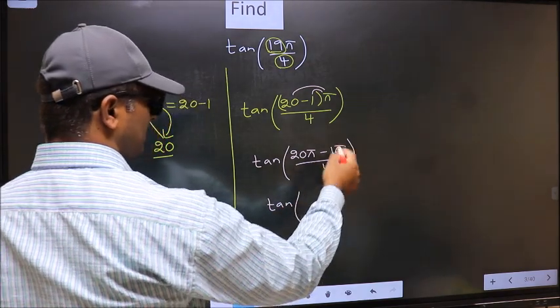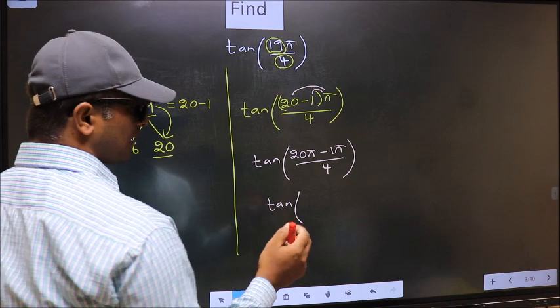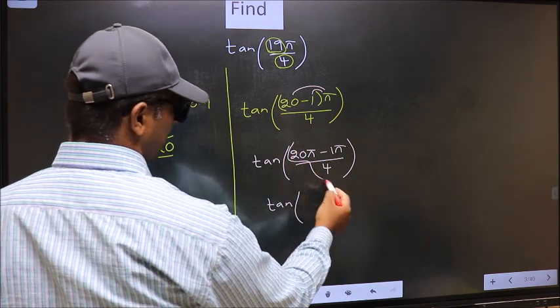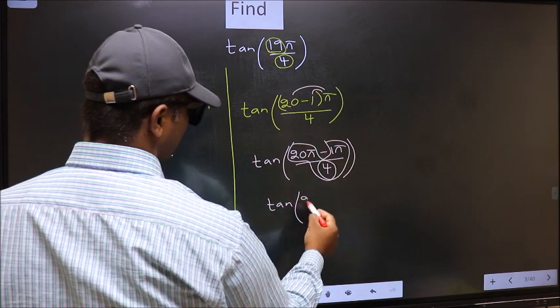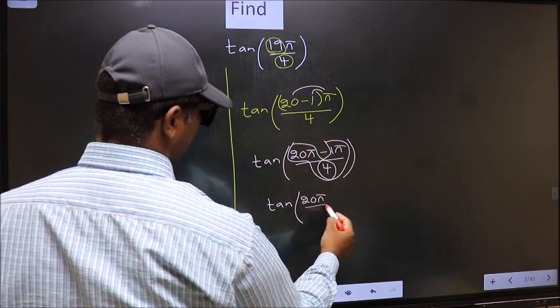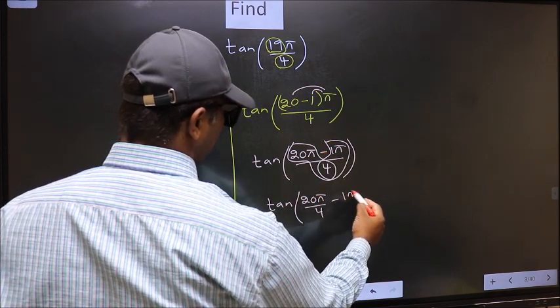Over here, you should split the denominator in this way. That is, 20 pi by 4 minus 1 pi by 4.